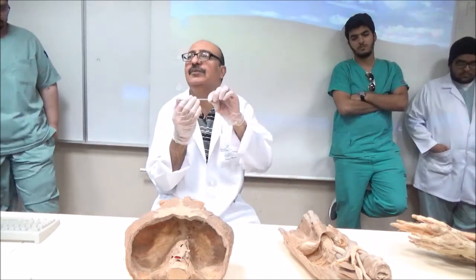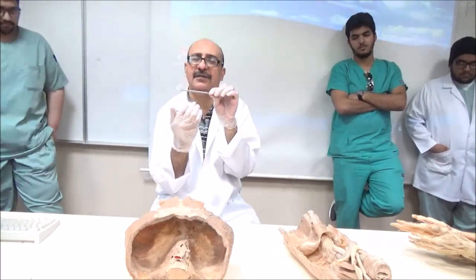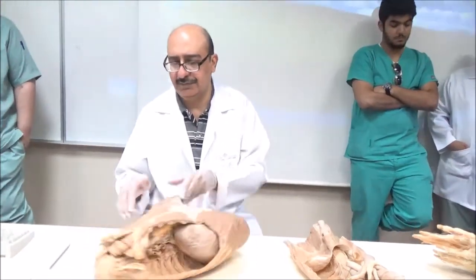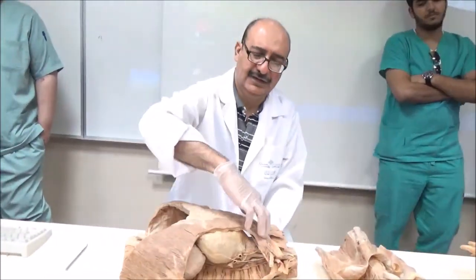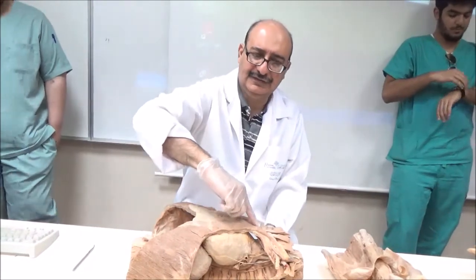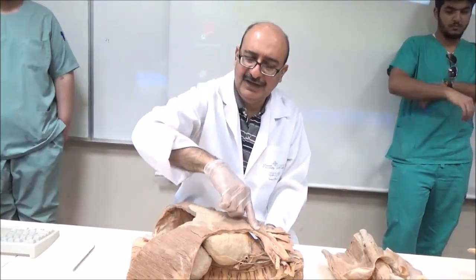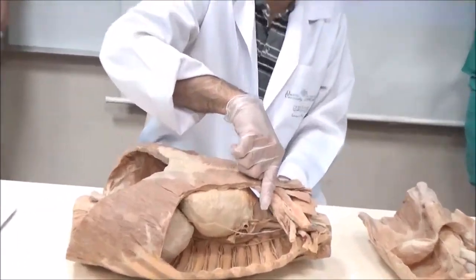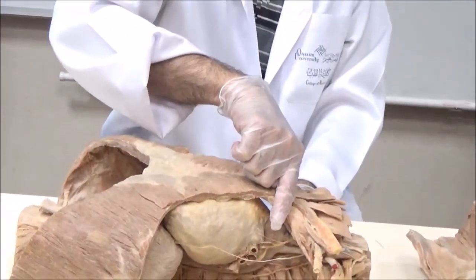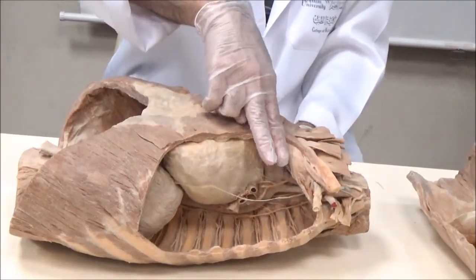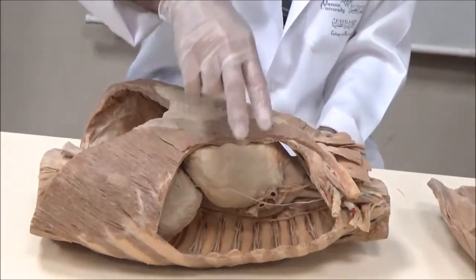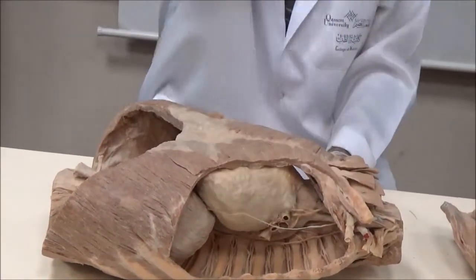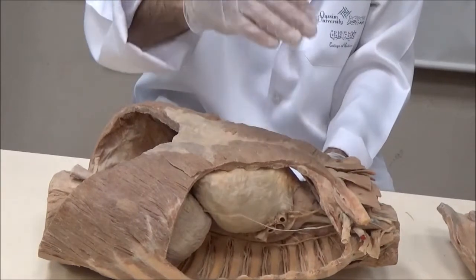The sternal angle has three clinical importances. First, if I find the sternal angle here — here is the sternal notch and here is the sternal angle — if I follow this sternal angle laterally, I am landing in the second intercostal space, for everyone. Then I count the third intercostal, fourth, fifth, sixth, like this. This is how I count the intercostal spaces.